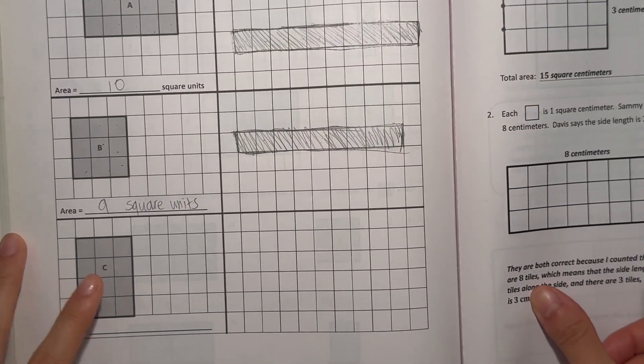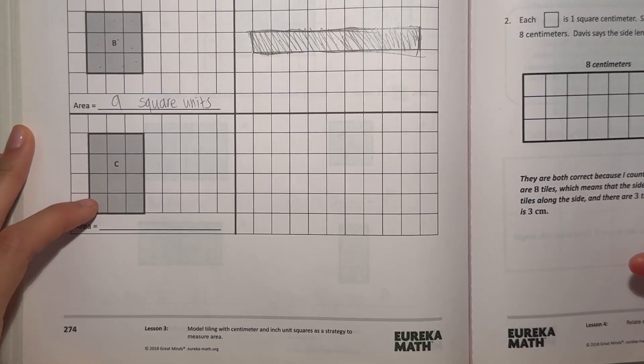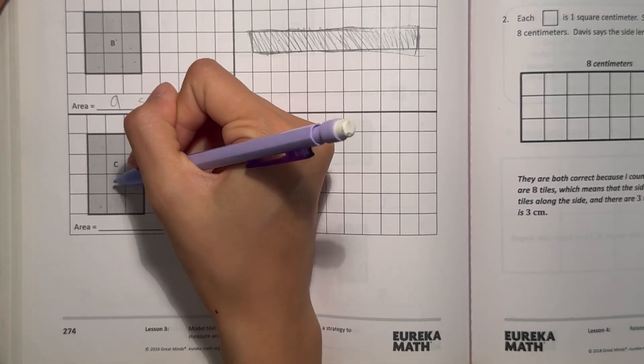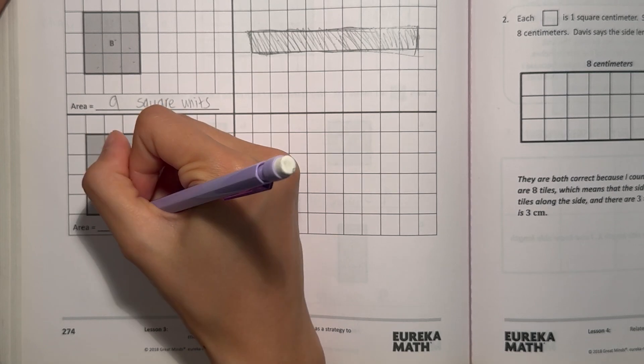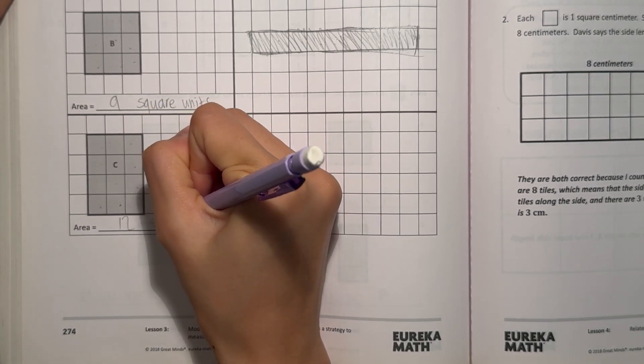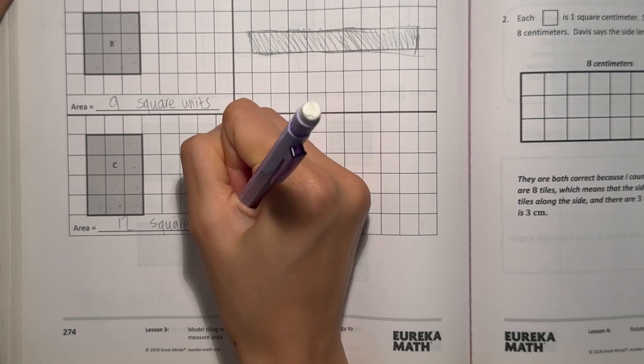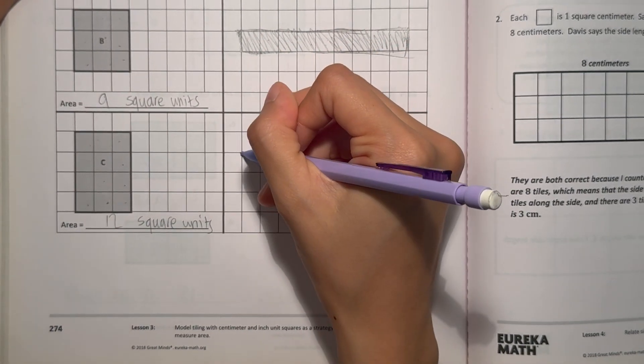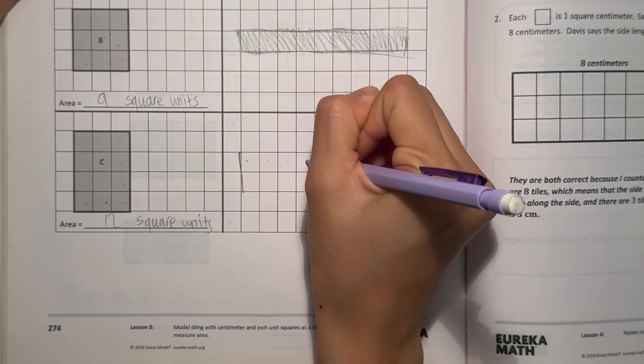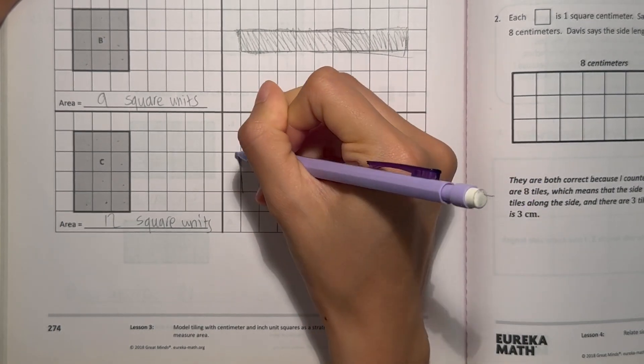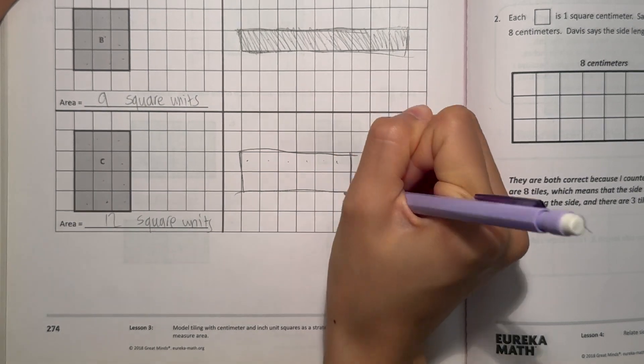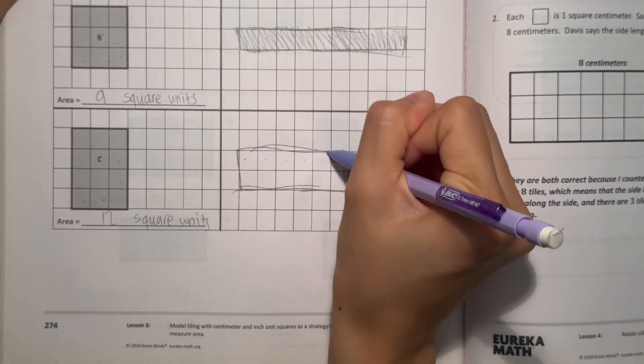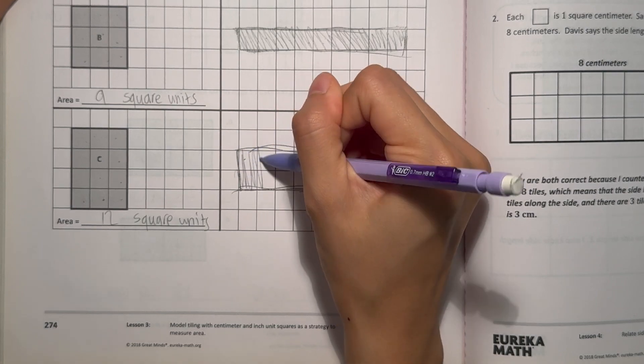Alright. And now our last one. Rectangle C. Our area is 1, 2, 3, 4, 5, 6, 7, 8, 9, 10, 11, 12 square units. I can use 6 by 2. Let's do 2, 3, 4, 5, 6. So this rectangle has the same area as the other one. So this one could work. So yeah.